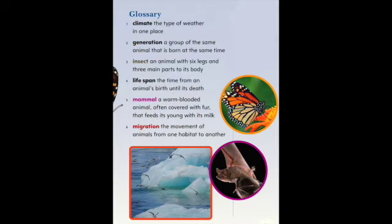Glossary: Climate — the type of weather in one place. Generation — a group of the same animal born at the same time. Insect — an animal with six legs and three main parts to its body. Lifespan — the time from an animal's birth until its death. Mammal — a warm-blooded animal often covered with fur that feeds its young with its milk. Migration — the movement of animals from one habitat to another.